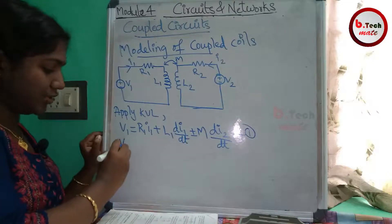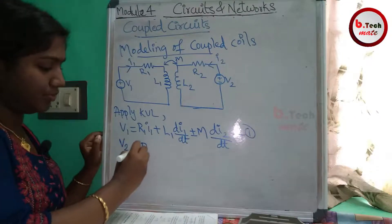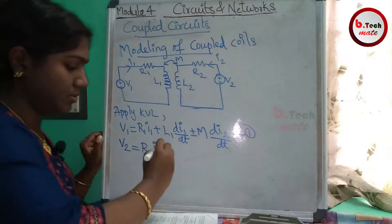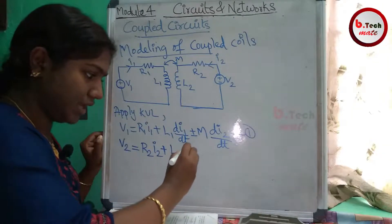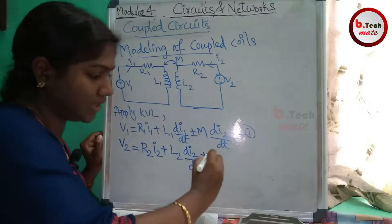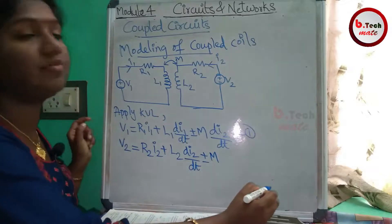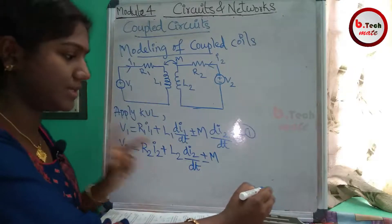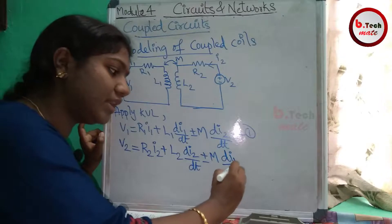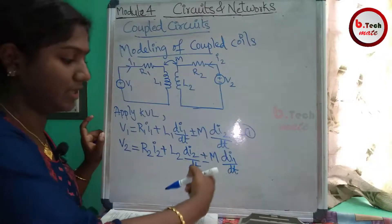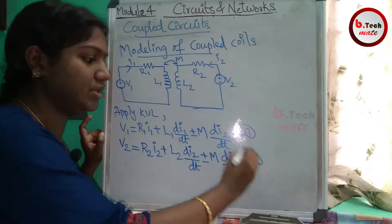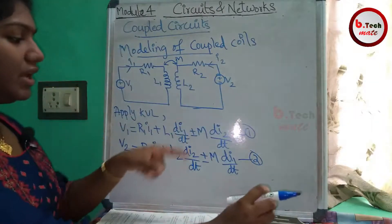The second circuit equation is: V2 equals R2 times I2 plus L2 times dI2 by dt, plus or minus M times dI1 by dt. These are the two KVL circuit equations for the coupled coil model.